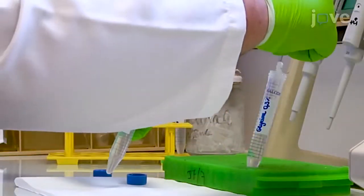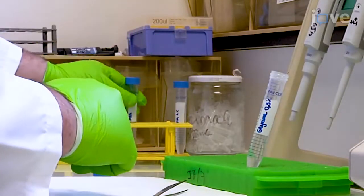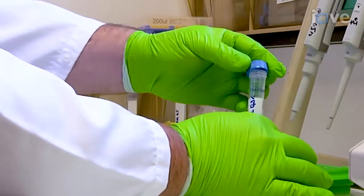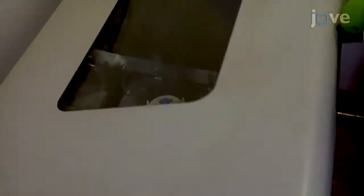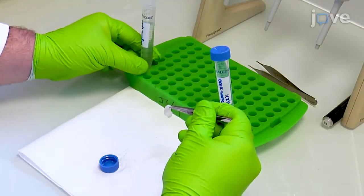Transfer the tissue to a 15 mL tube containing 10 mL of 0.3% glycine in PBS for a 2-hour incubation with shaking at 37 degrees Celsius to quench remaining free aldehyde groups.